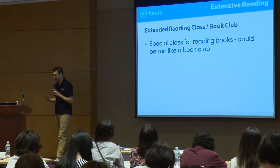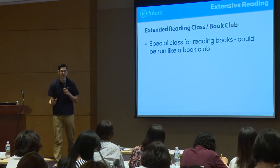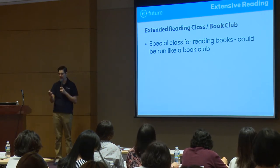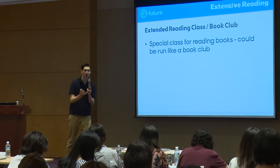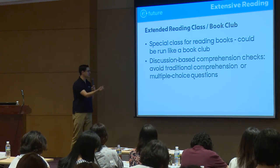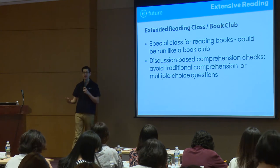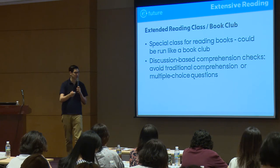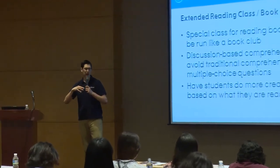You could also have an extended reading class or a reading club — maybe something you could do in the winter or summer session if you have time for a special class. For example, you could have a book club where students might be reading all the same books. Maybe they actually vote on a book they want to read together. You could have discussion-based comprehension checks rather than traditional multiple choice or a test — actually talk about what's happening in the book. Have students do more creative projects based on what they're reading: making art, a screenplay, a video, a podcast.